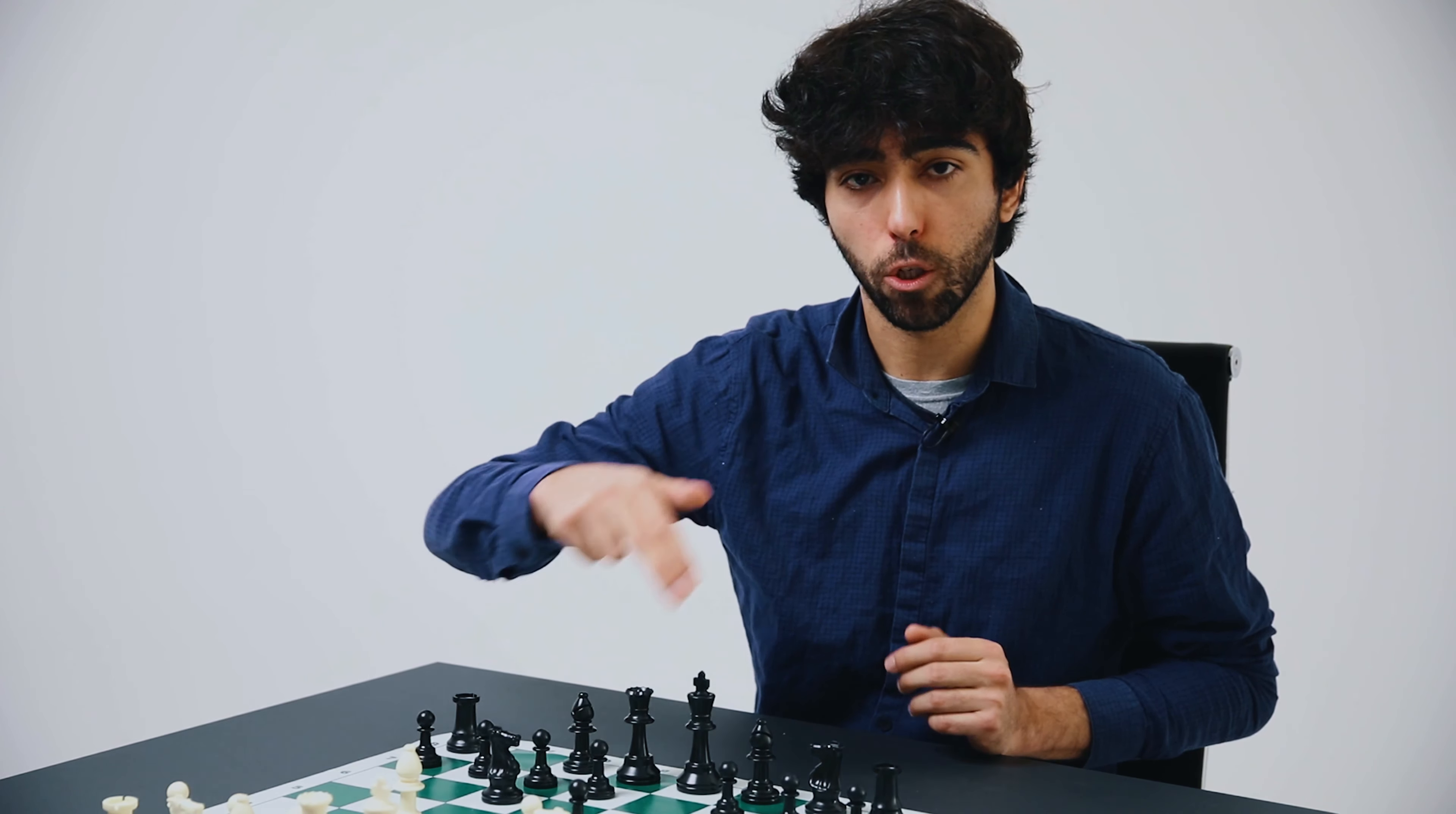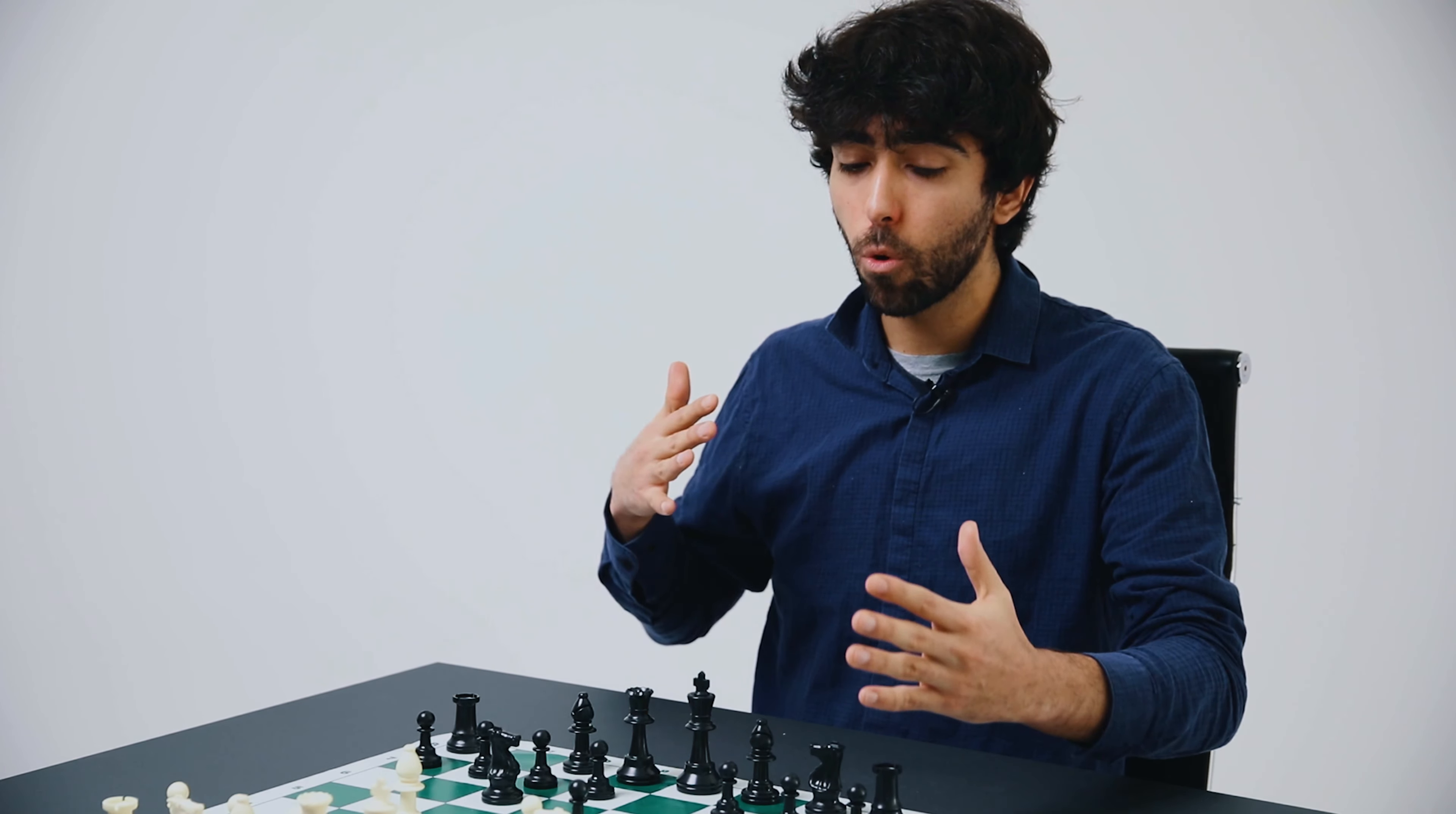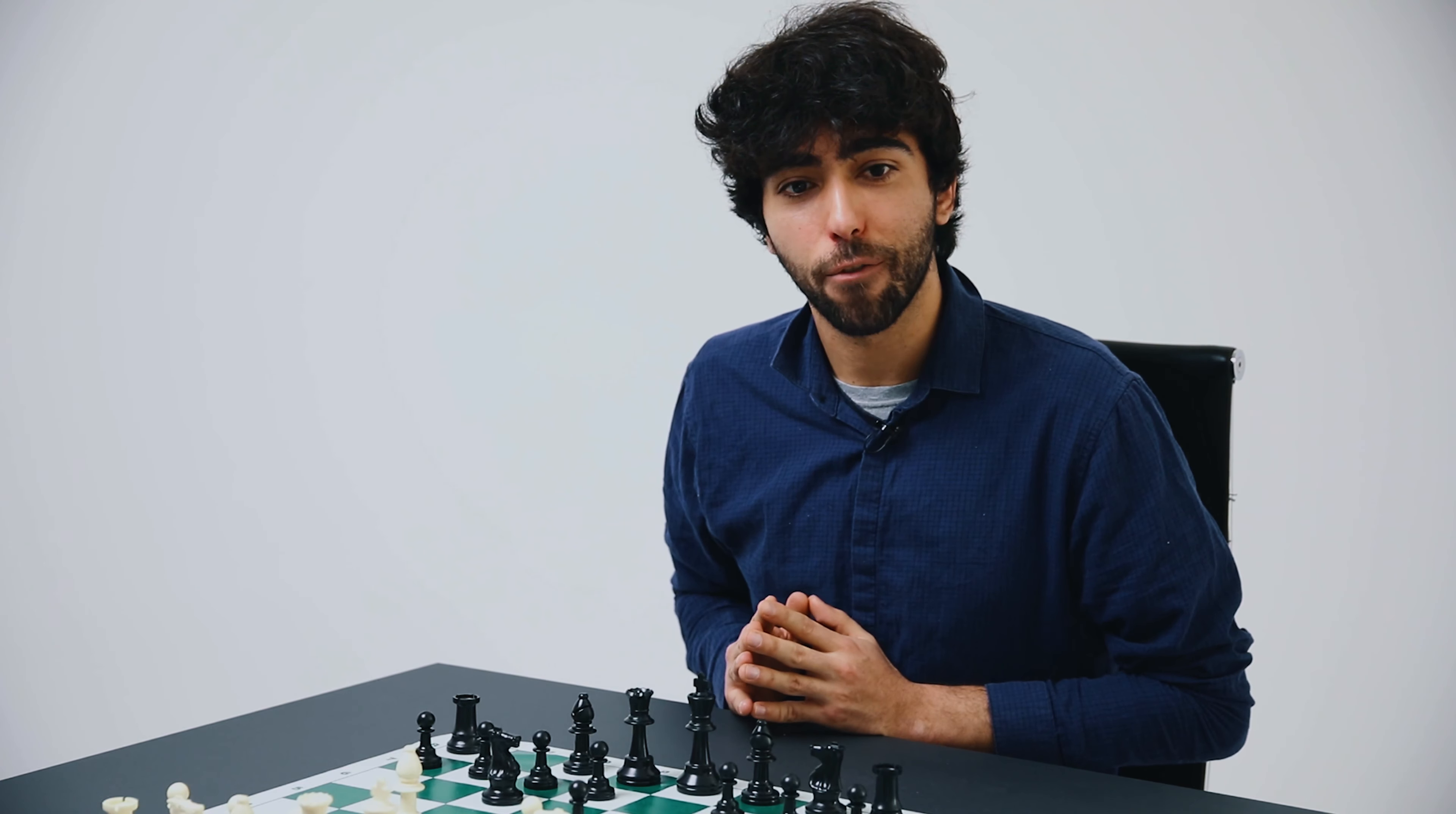There is only one last thing to say for this overview of the Italian game. And that is that if we go back to the starting position, we mentioned at the beginning of the video that after e4, e5, knight to f3, knight to c6, bishop to c4, and here we have some rare options. We have bishop to e7 is the Hungarian defense,